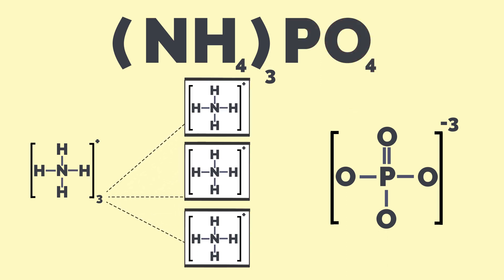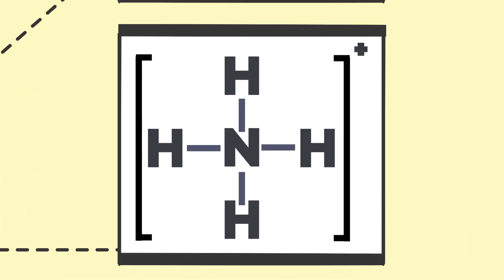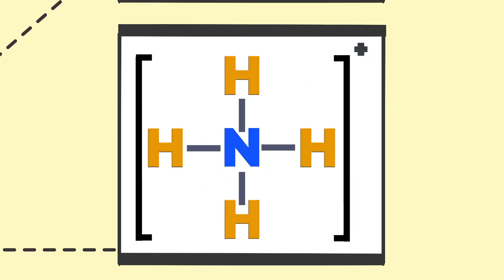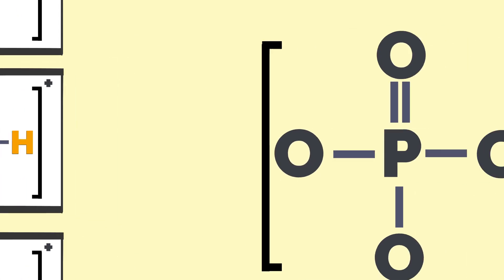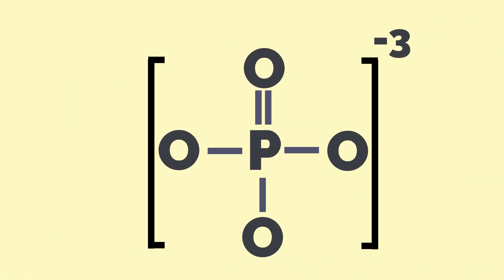Looking at each of the molecules, ammonium is made up of one nitrogen atom and four hydrogen atoms, while phosphate is made up of one phosphorus atom and four oxygen atoms.